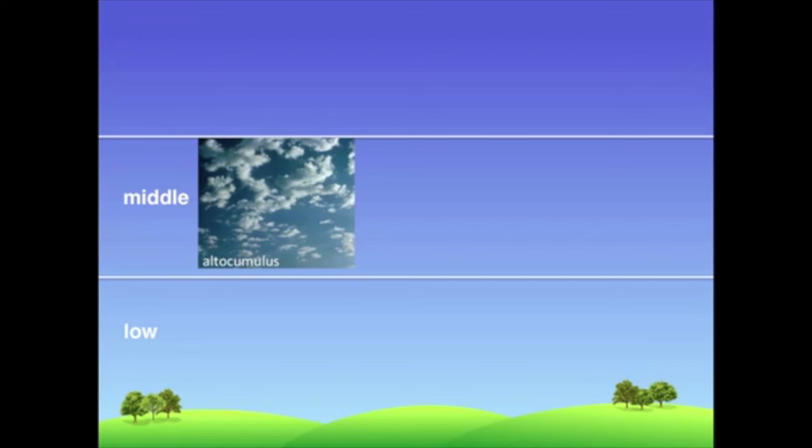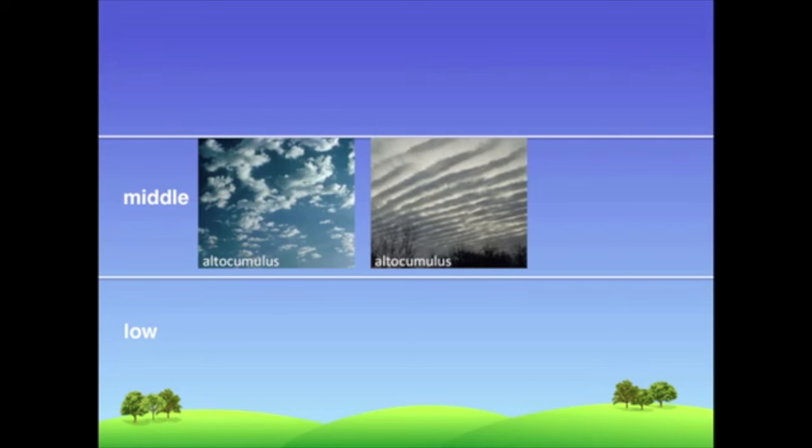Extend your arm out towards the sky. If the little puffs of cloud are about as wide as your thumb, then the clouds are altocumulus instead of cumulus. Altocumulus clouds can also form ridges in the sky that look like waves or the scales of fish.